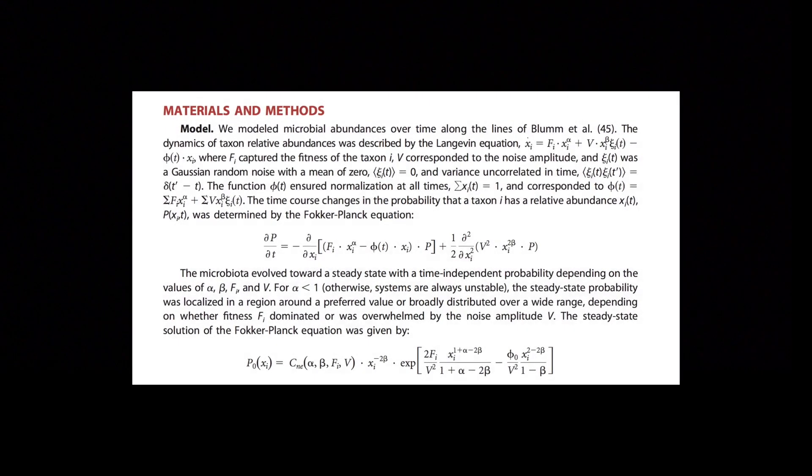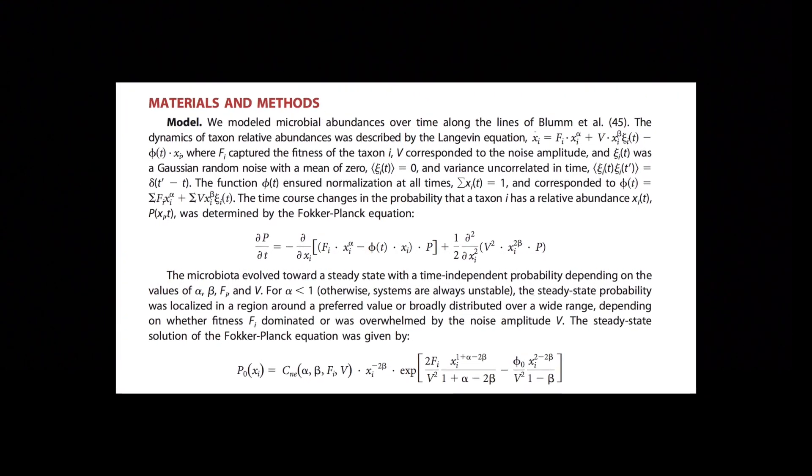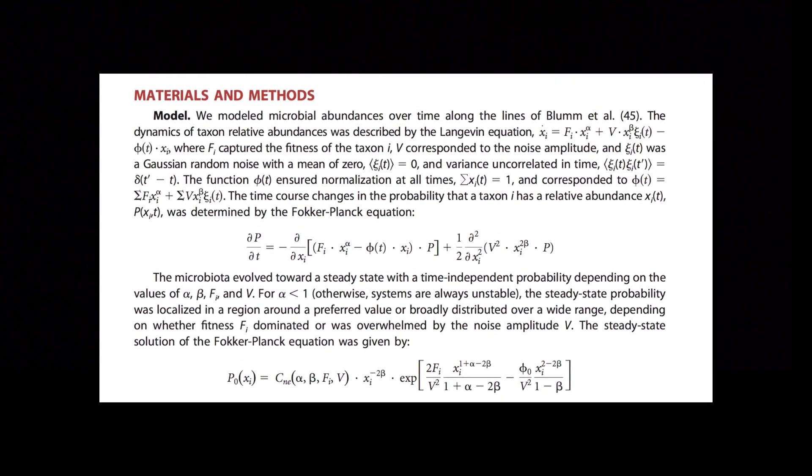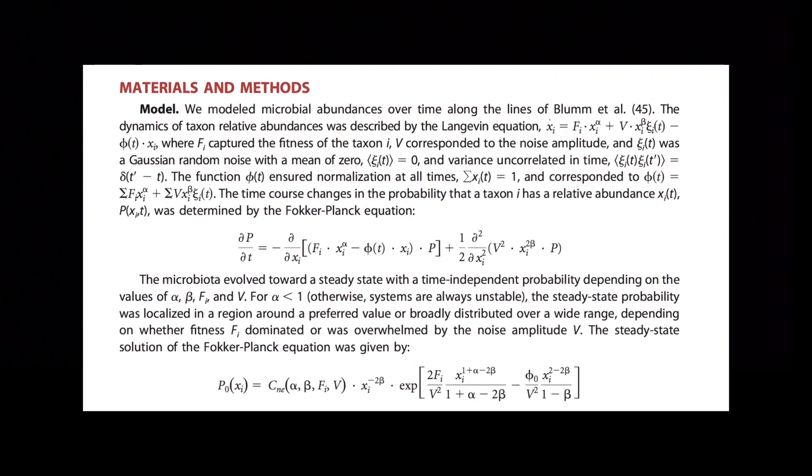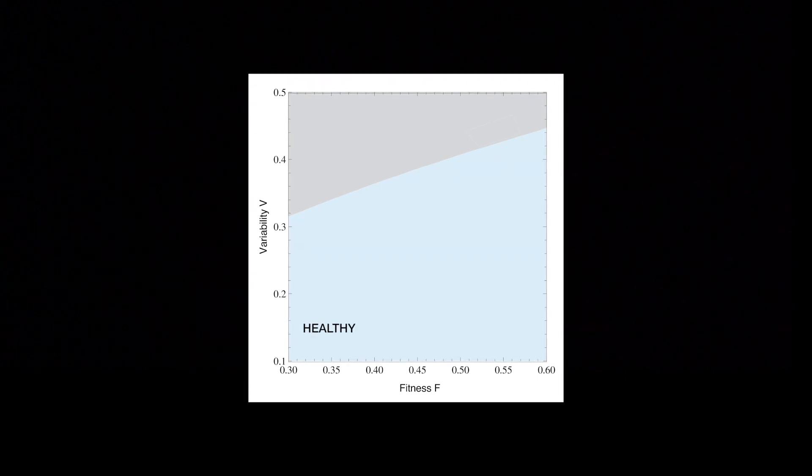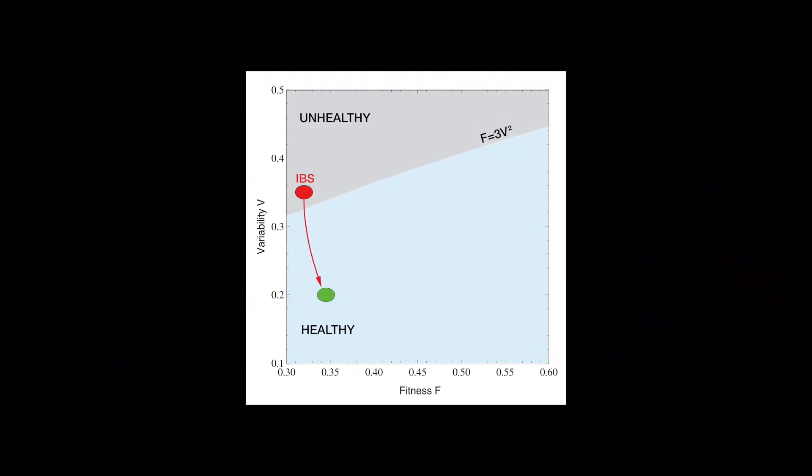We model the metagenome by a ranking process, assuming that taxon relative abundances follow a Langevin equation. Our model predicts two phases for the gut microbiome: